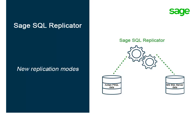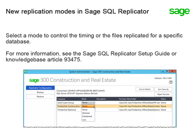Sage SQL Replicator is a tool that copies your data from the Pervasive Data Management System into SQL Server for improved report performance and for mobile intelligence. SQL Replicator now has new modes for how you want to replicate your data. Select from None, Minimal, Scheduled, or Live depending on the type of synchronization needed for reporting or if you use Sage Field Operations only without a need for SQL reporting. To learn which mode best suits your needs, see the Sage SQL Replicator Setup Guide or Knowledge Base Article 93475.